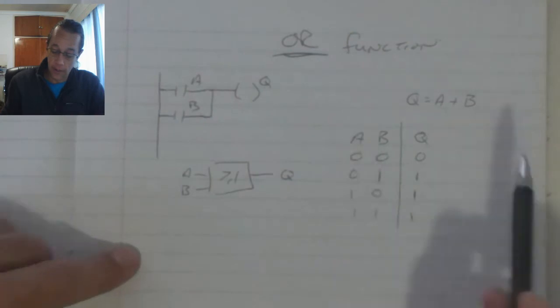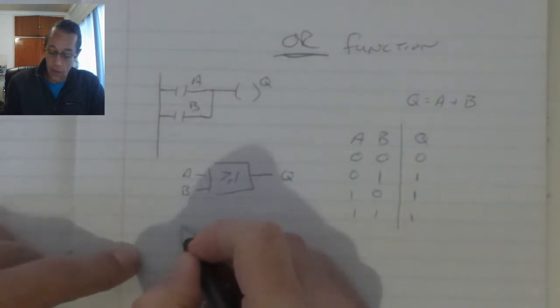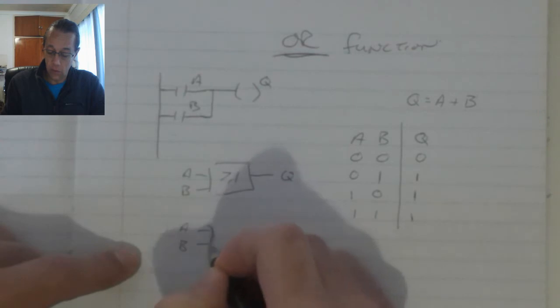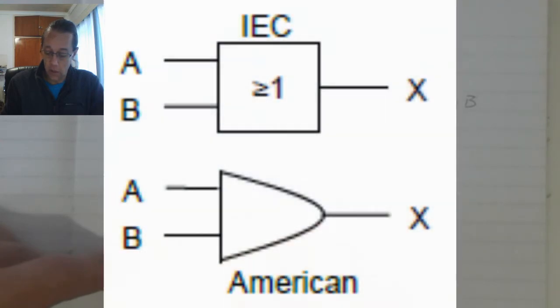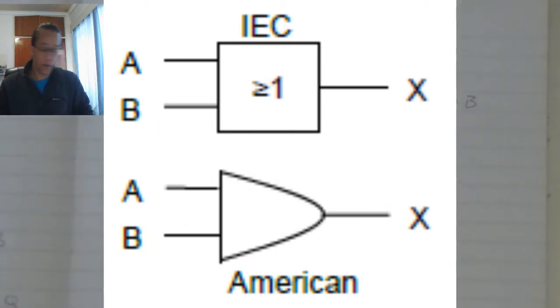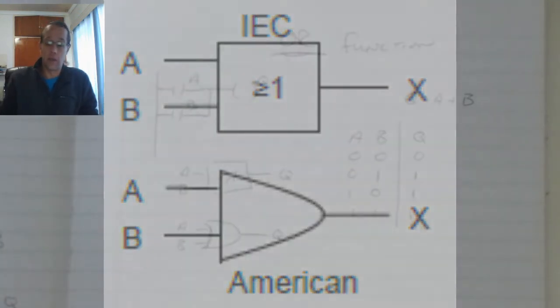then the output will be ON. The American symbol, there's an arrowhead like that. And that is the ALL function.